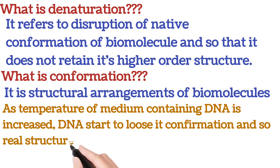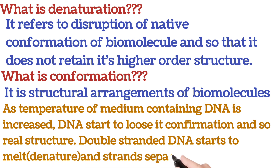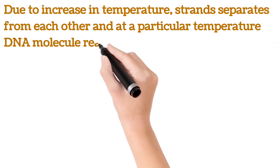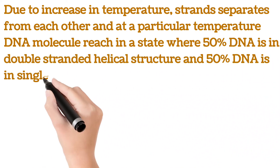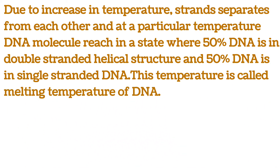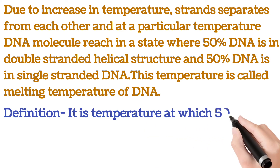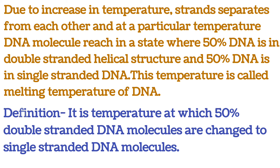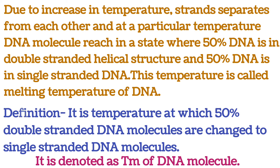As DNA loses its conformation, the real double-stranded structure starts to melt — that is, it denatures and the strands separate from each other. At a particular temperature, DNA reaches a state where 50 percent of its strands are in duplex form coiled over each other and 50 percent are separated into single strands. The temperature at which this state is reached is called the melting temperature (Tm) — the temperature at which 50 percent of double-stranded DNA is converted to single-stranded DNA.